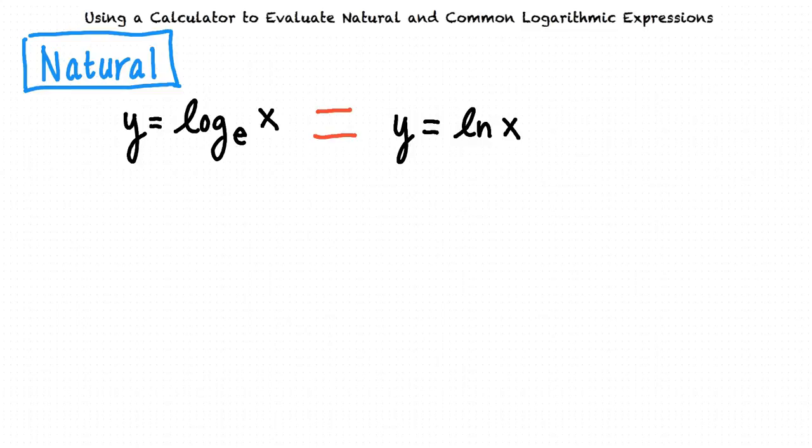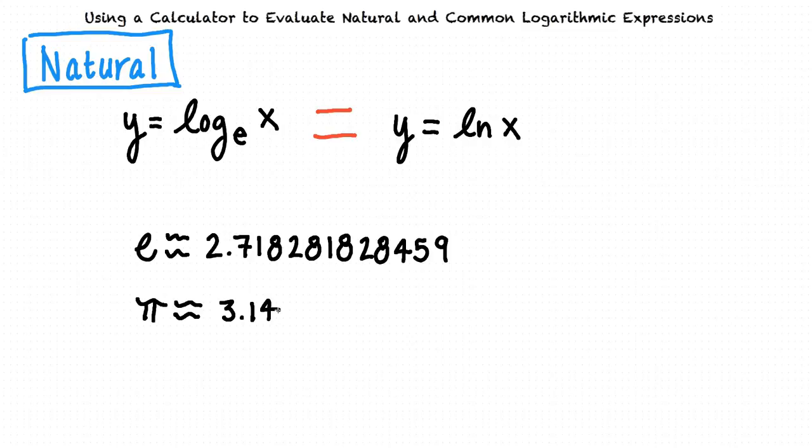What does the e represent? The mathematical constant e is an irrational and transcendental number approximately equal to 2.718281828459. We use the letter e to represent this number, similar to how we use the symbol pi to represent the irrational number approximately equal to 3.14.